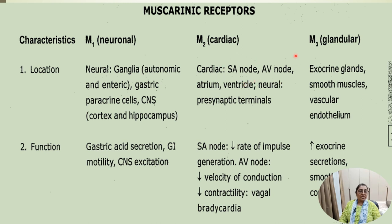M2 receptors are located at the heart — at the SA node, AV node, atrium, ventricle, and neural pre-synaptic terminals. Functions of M2 receptors include: at the SA node, a decrease in rate of impulse generation; at the AV node, a decrease in velocity of conduction; decreased contractility; and vagal bradycardia.